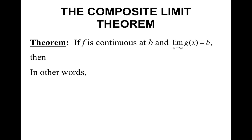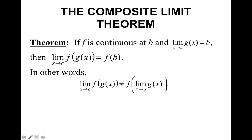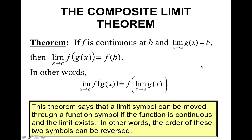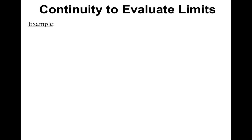The next theorem is the composite limit theorem. If f is continuous at b, and the limit as x approaches a of g of x equals b, then the limit as x approaches a of f composed with g equals f of b. In other words, if we take the limit of a composite function, we can take the limit of the inside function first and use that value to evaluate the outside function. A limit symbol can be moved through a function symbol if the function is continuous and the limit exists. We're going to use this theorem to help us evaluate complicated limits.